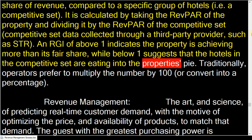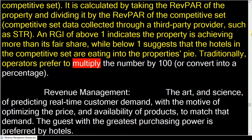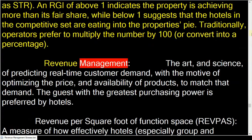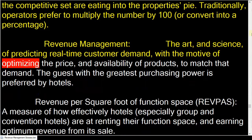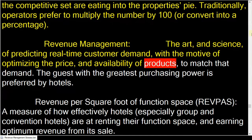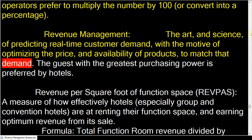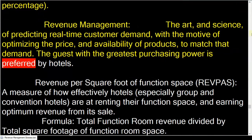An RGI above one indicates the property is achieving more than its fair share, while below one suggests that the hotels in the competitive set are eating into the property's pie. Traditionally, operators prefer to multiply the number by 100.